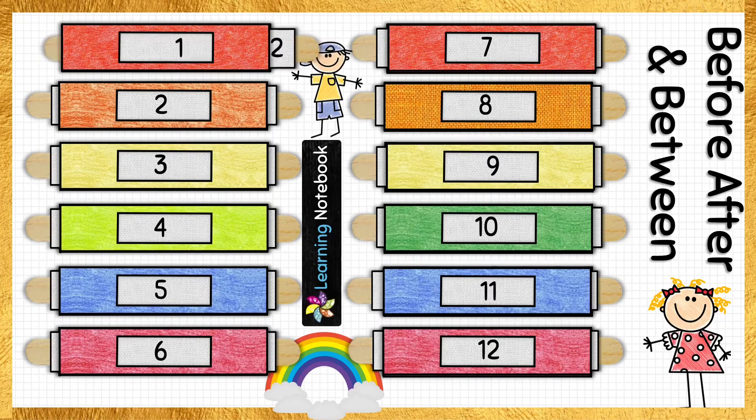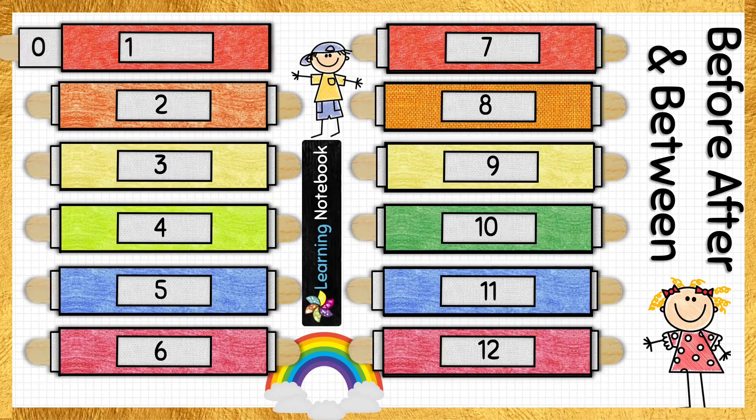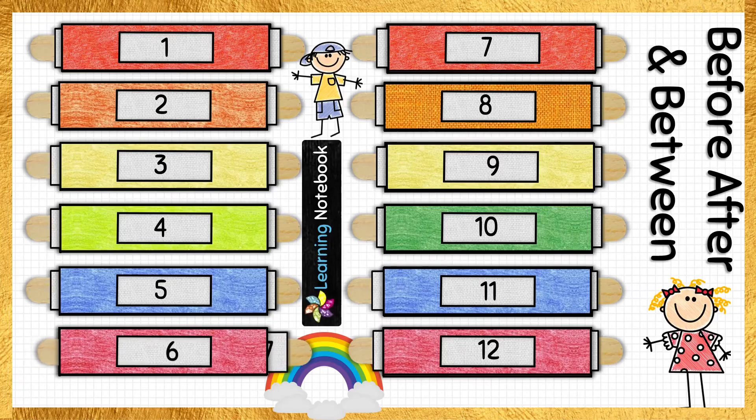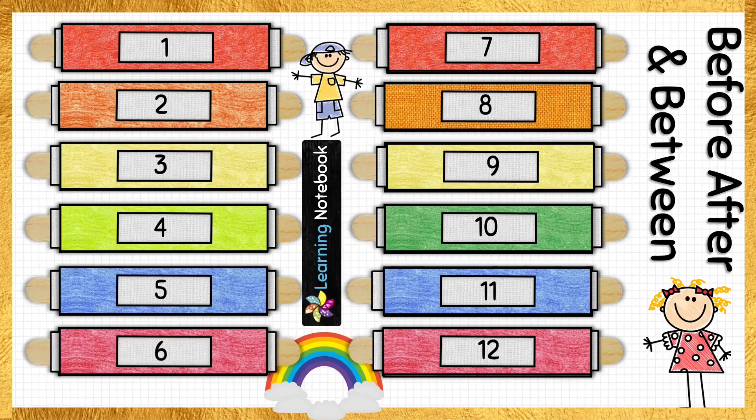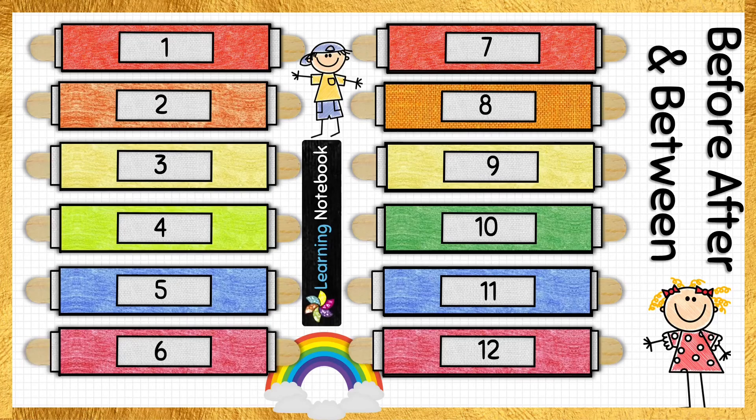What comes after 1? 2. And what comes before 1? 0. And 1 is in between 0 and 2. Next, what comes after 6? 7. And before 6? 5. And 6 is in between 5 and 7.